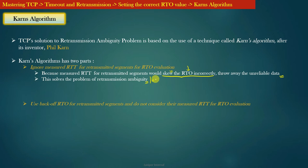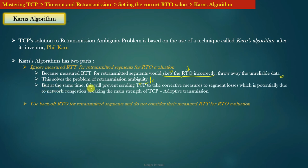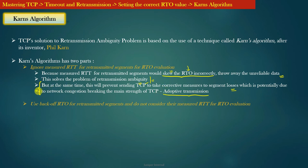The root cause of the ambiguity problem was deciding which RTT to choose. Kahn's algorithm says: do not choose any RTT at all, so the ambiguity problem disappears. However, by not choosing any RTT of retransmitted segments, another problem arises — it will prevent the sending TCP from taking corrective measures to segment losses, which is potentially due to network congestion, breaking the main strength of TCP which is adaptive transmission.